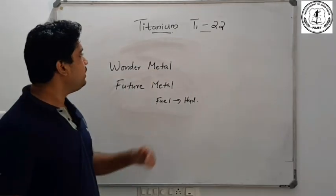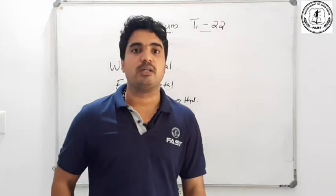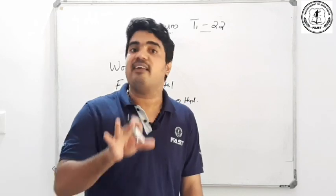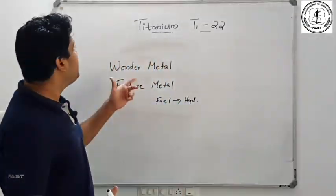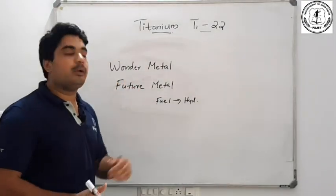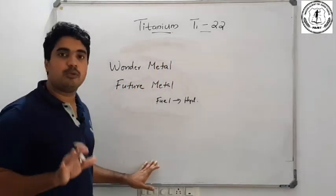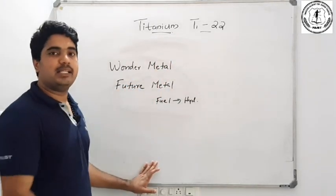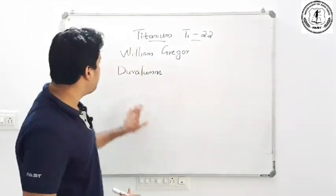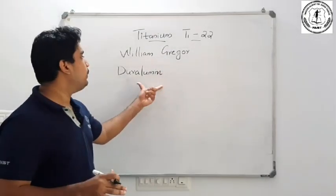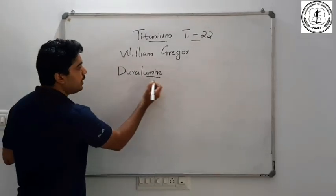We call it Titanium. We call the alloy Duralumin. Duralumin is also called Alumin.